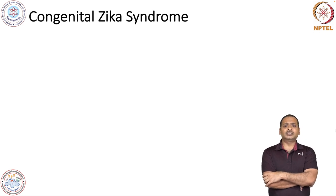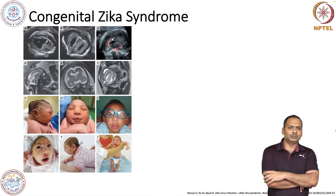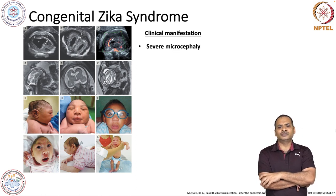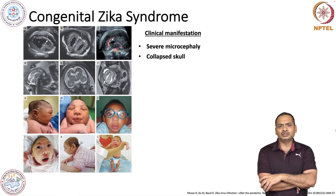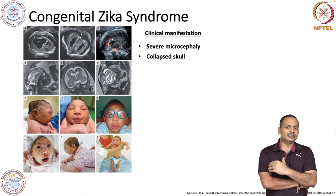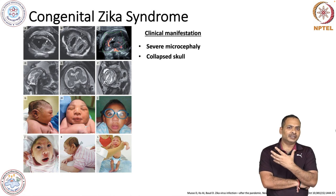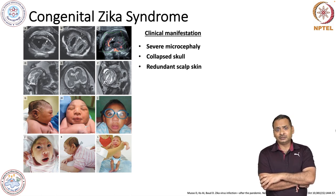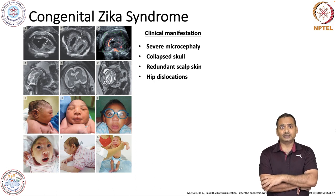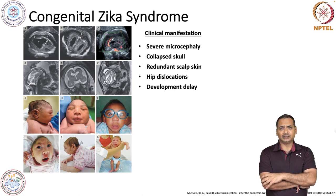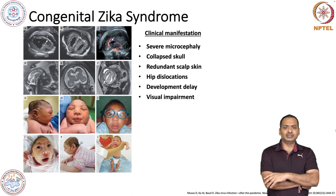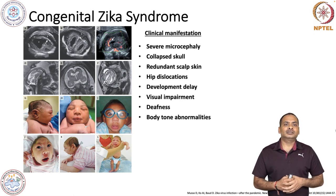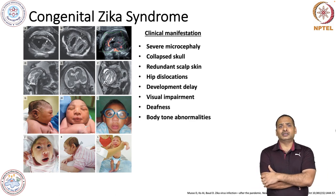Congenital Zika syndrome involves a series of complications and clinical manifestations. These include severe microcephaly and collapsed skulls, redundant scalp skin, hip dislocation, developmental delay in the fetus, visual impairment as shown in this image, deafness, and body tone abnormality. As you can understand, this virus is somehow affecting the brain and head region in developing fetuses.